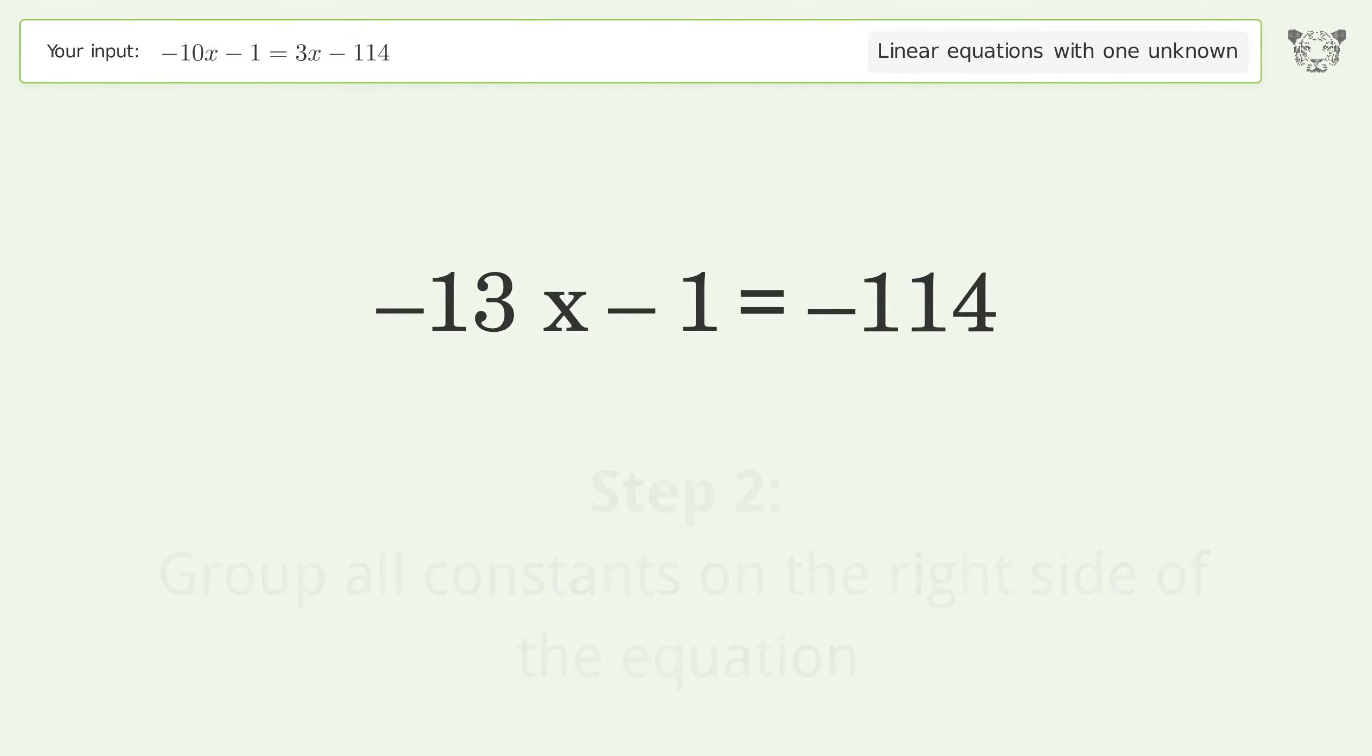Group all constants on the right side of the equation. Add 1 to both sides. Simplify the arithmetic.